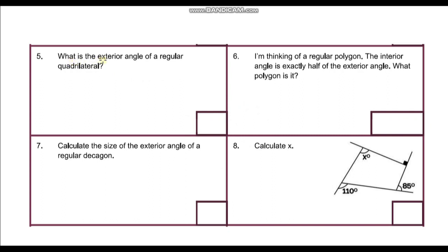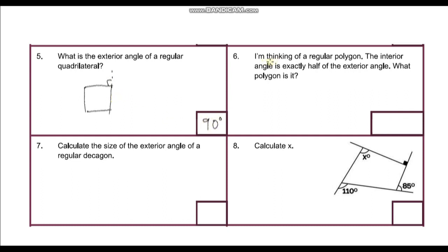Question five: what is the exterior angle of a regular quadrilateral? A regular quadrilateral has four sides — this is just another word for a square, where all sides and angles are equal. The exterior angle of a square is 90 degrees, so my answer is 90 degrees.